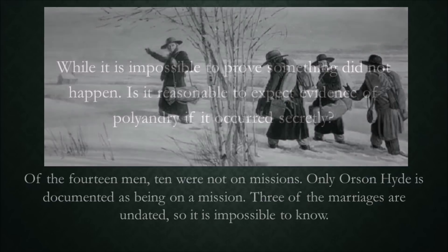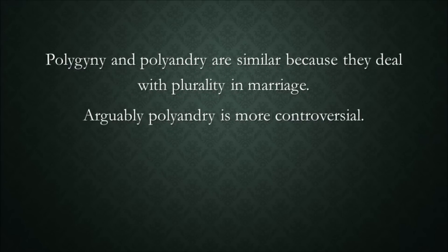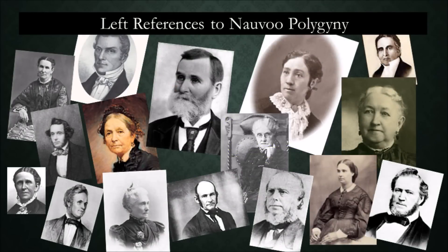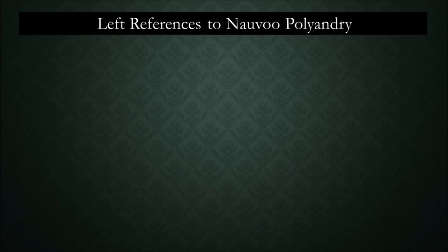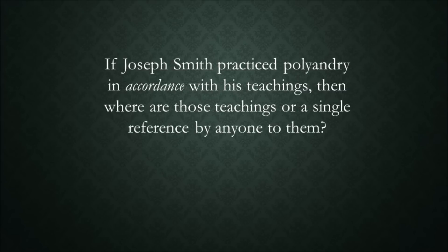While it is impossible to prove something did not happen, is it reasonable to expect evidence of polyandry if it occurred secretly? Polygyny and polyandry are similar because they deal with plurality in marriage; arguably, polyandry is more controversial. The CES Letter argues that both were practiced in Nauvoo. An important question is: if Joseph Smith practiced polyandry, was it in accordance with his teachings or in contradiction to them? If in accordance, then where are those teachings, or even a single reference to any of them?